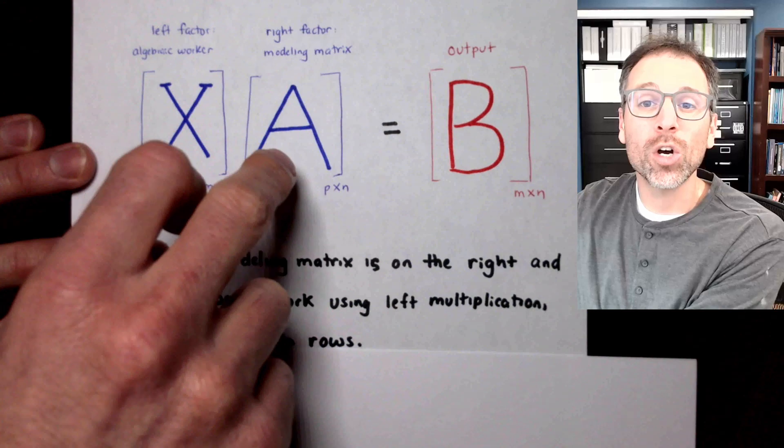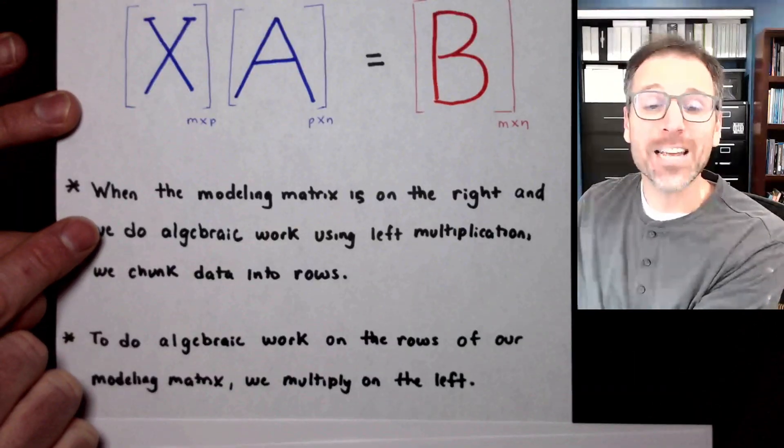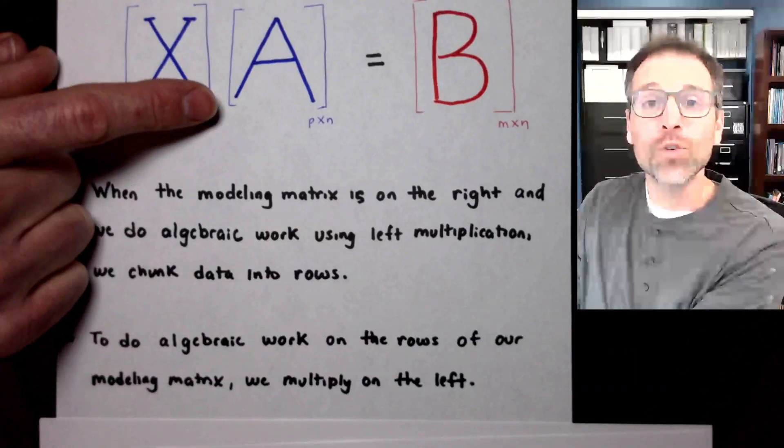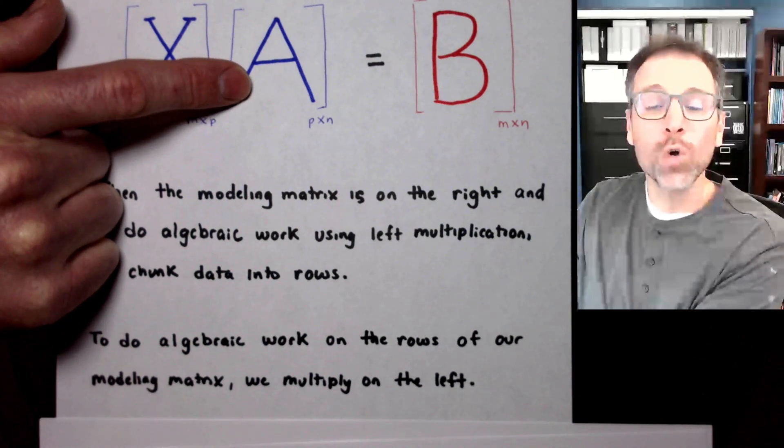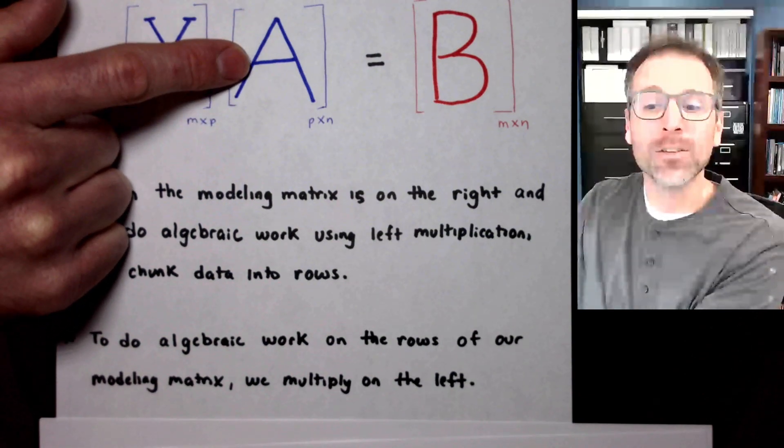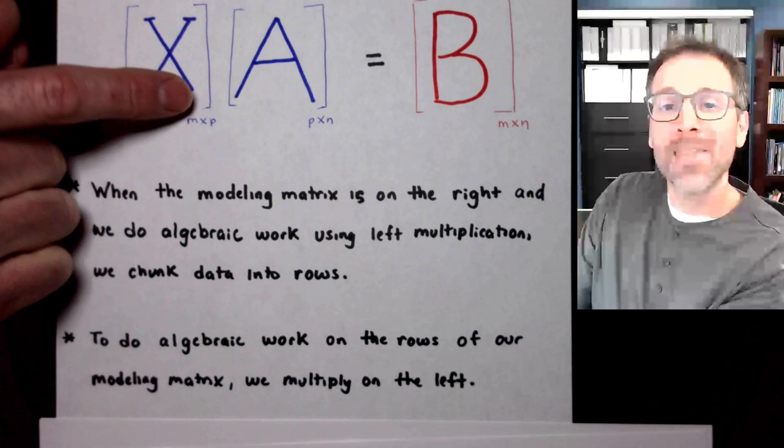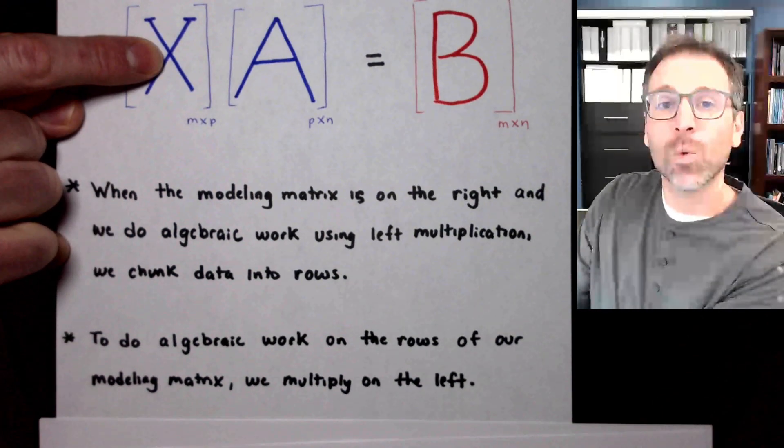We break X into rows, A into rows, and B into rows. A different way to say the same idea is if we want to do algebraic work on the rows of our modeling matrix, if we want to manipulate the rows, we multiply that modeling matrix on the left by an algebraic worker.